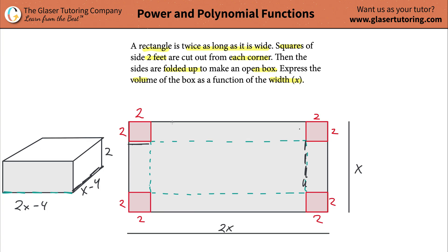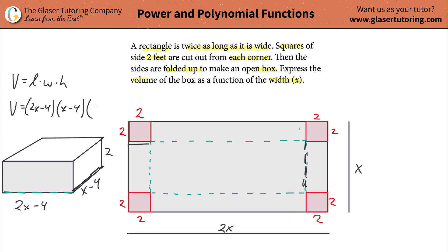Now you have the dimensions of your box. If you're having trouble visualizing this, literally take out a piece of paper — regular paper is like 8.5 by 11, it's a rectangle — start cutting out square boxes on the corners and then fold it up. Now, the volume is always length times width times height. The length is 2x minus 4, the width is x minus 4, and the height is 2. That's the formula — if you know what x is, what the width is, you can figure out the volume.